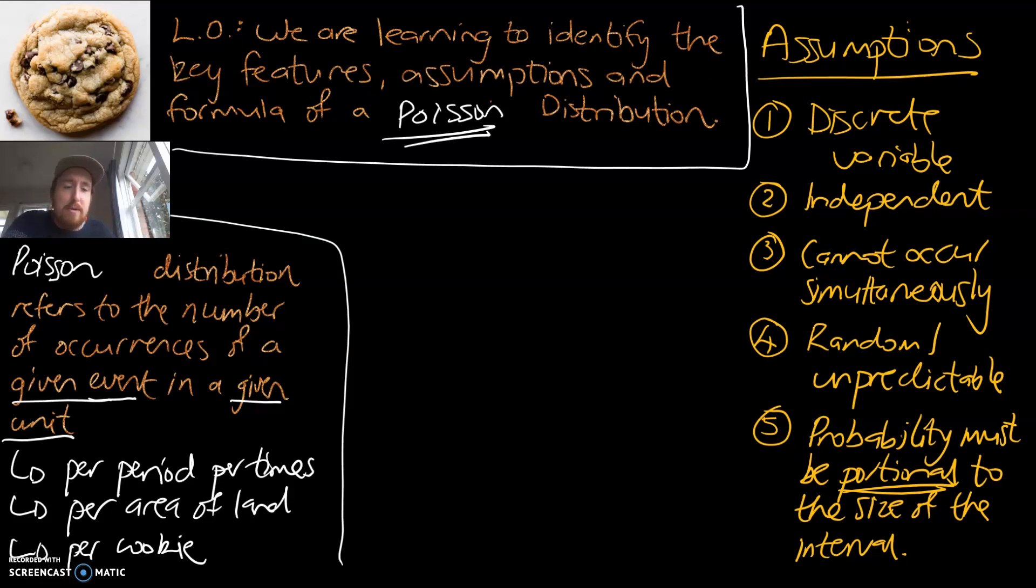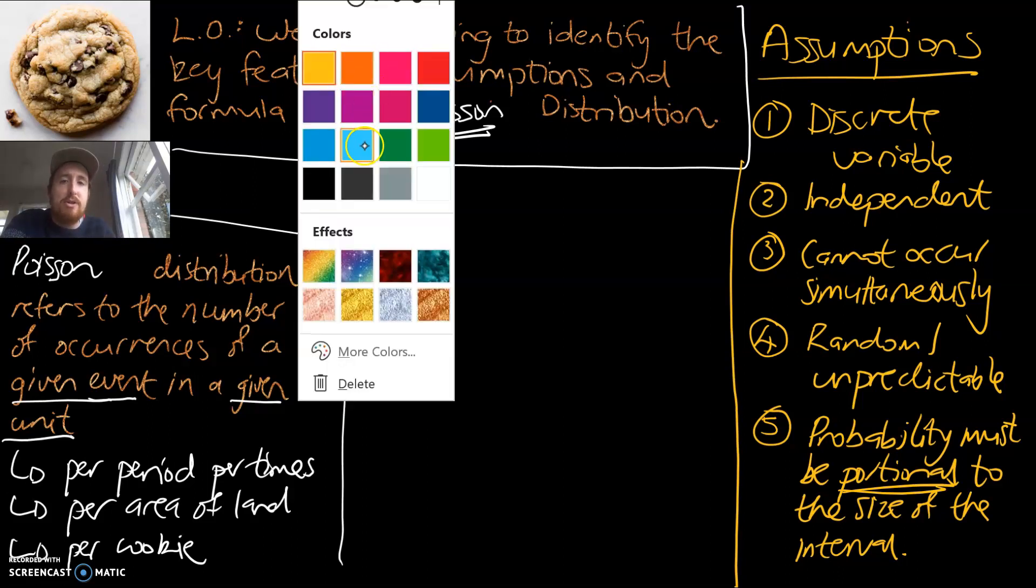If we're looking at two cookies, we're probably going to expect more chocolate chips in those two cookies than in one cookie. If you're looking at a small garden, you're probably going to expect less dandelions than maybe the neighbor's bigger garden. And that is a quick summary of the five assumptions of a Poisson distribution.